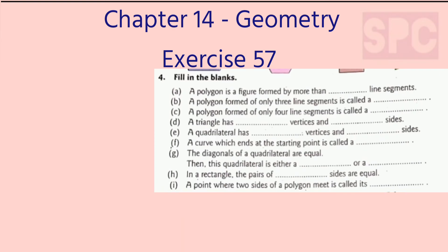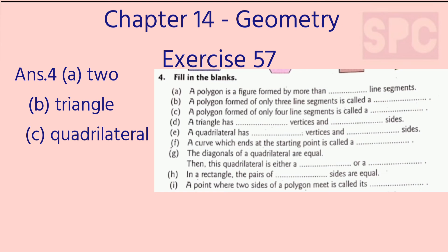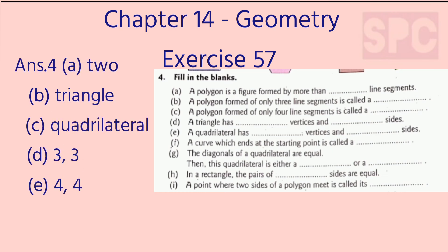Question 4, fill in the blanks. Part A: A polygon is a figure formed by more than two line segments. Part B: A polygon formed by only three line segments is called a triangle. Part C: A polygon formed of only four line segments is called a quadrilateral. Part D: A triangle has three vertices and three sides. Part E: A quadrilateral has four vertices and four sides. Part F: A curve which ends at the starting point is called a closed figure.